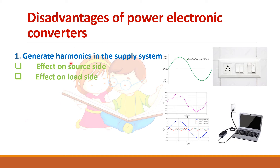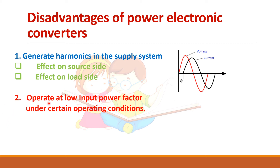The disadvantages of power electronic converters: the major limitation is that they inject harmonics into the supply system. Ideally, if you see the waveform at a plug point, it will be purely sinusoidal. But if you connect a nonlinear load like a laptop to the source, the waveform gets distorted and it will also affect other loads connected to the same point. So they inject harmonics into the supply side.